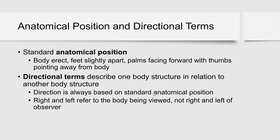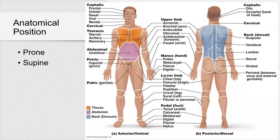Direction is always based on standard anatomical position. Right and left refer to the body being viewed — your patient's right or left, not your right or left. We can see this gentleman in anatomical position. This is the anterior or ventral view, and this is posterior or dorsal. If a patient is lying on their belly, that is prone position. If a patient is lying on their back, that is supine position.